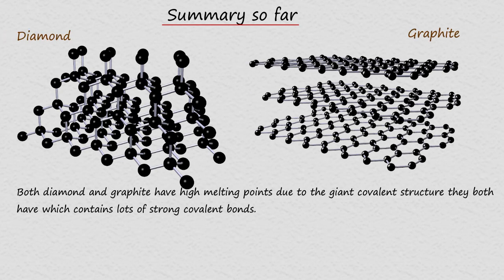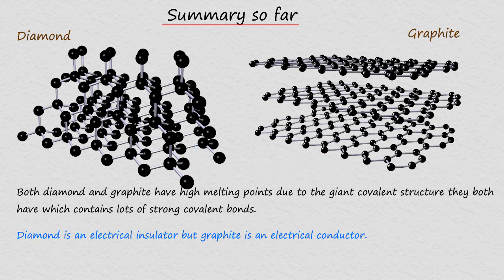To summarise: both diamond and graphite have high melting points due to their giant structure, which contains lots of strong covalent bonds. To melt either diamond or graphite, you would have to break all these strong covalent bonds in the two giant macromolecular structures. Diamond is an electrical insulator since it has no free moving or delocalized electrons, but each carbon atom in graphite only makes three strong covalent bonds, leaving one free or delocalized electron per carbon atom. These delocalized electrons can move freely, allowing graphite to conduct electricity — similar to the delocalized electrons found in metallic bonding.